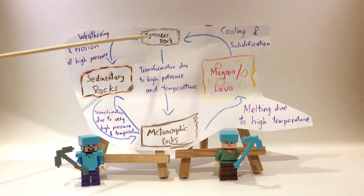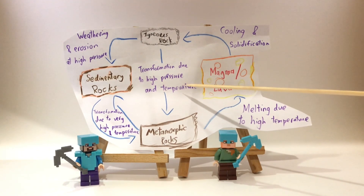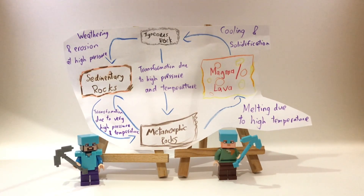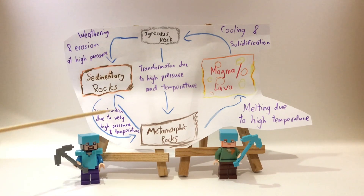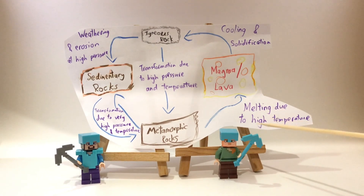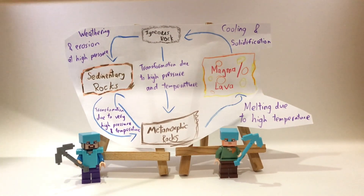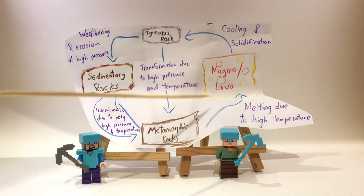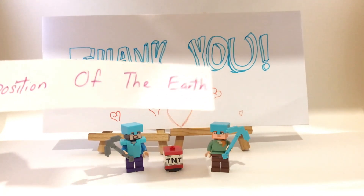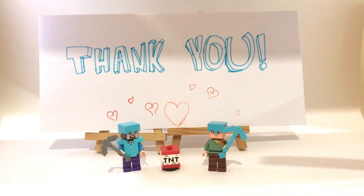In conclusion, igneous rocks become sedimentary rocks when they weather and erode at high pressure. The transformation due to high pressure and temperature changes igneous rocks into metamorphic rocks. Sedimentary rocks and metamorphic rocks interchange due to high pressure and temperature. The melting due to high temperature changes metamorphic rocks into magma or lava, and the cooling and solidification of magma and lava form igneous rocks. That concludes our sharing about the composition of the earth and the process of rock formation. Thank you for watching.